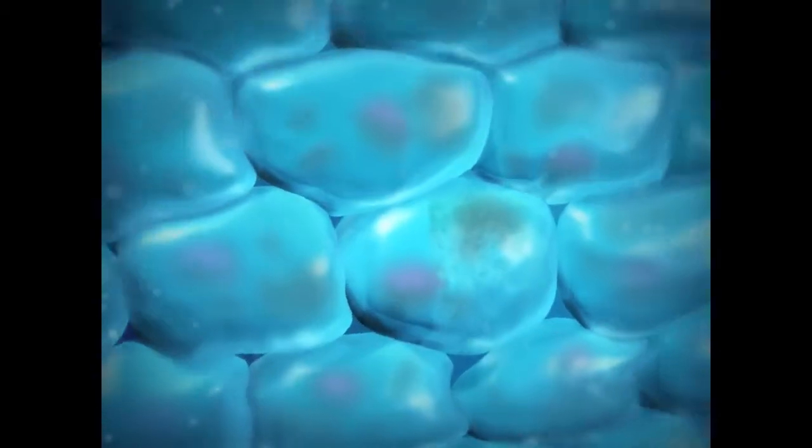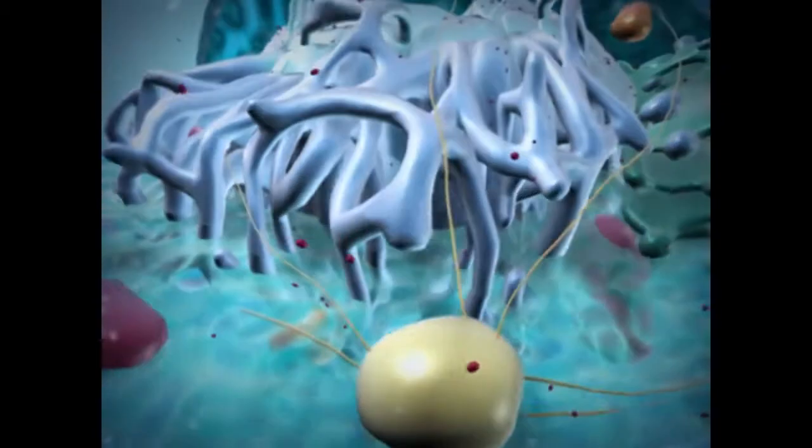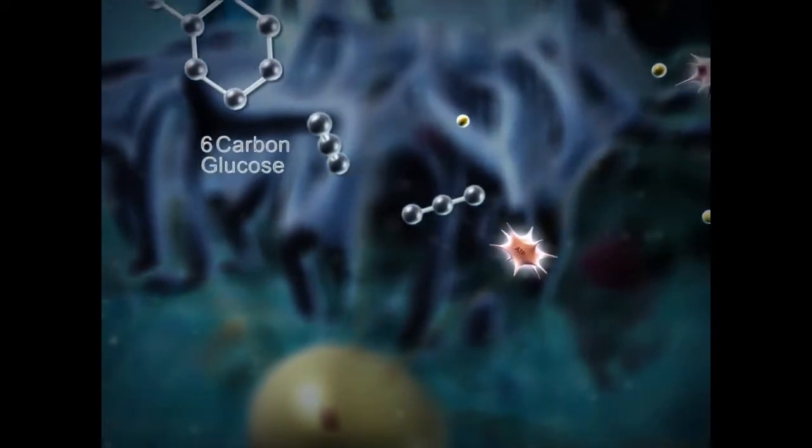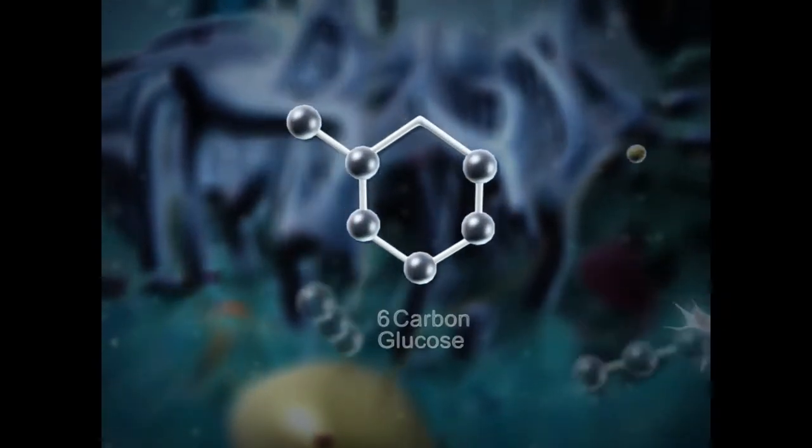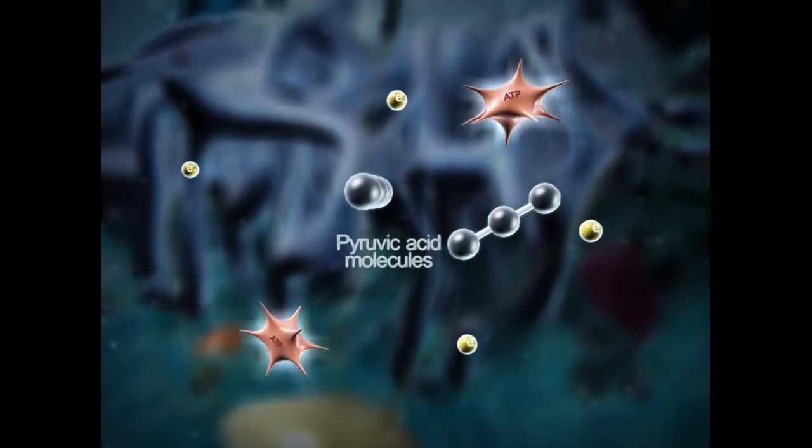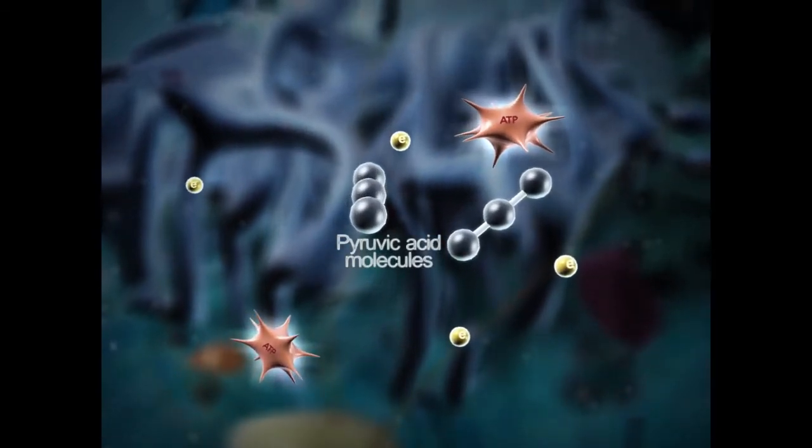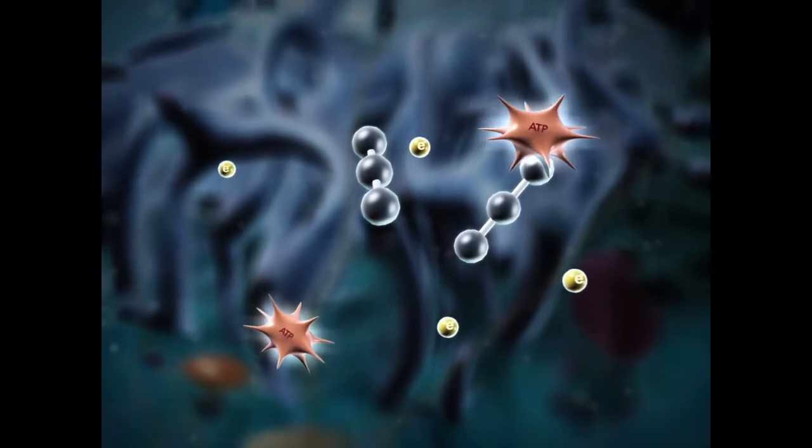Cellular respiration comprises three main steps. It begins when glycolysis breaks down a 6-carbon glucose molecule, producing two 3-carbon pyruvic acid molecules and a net gain of two ATP molecules, which the body uses as cellular energy.